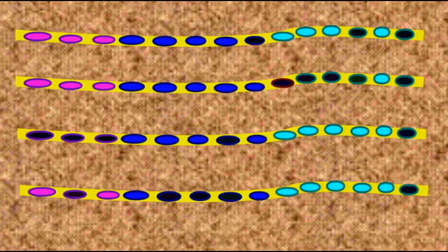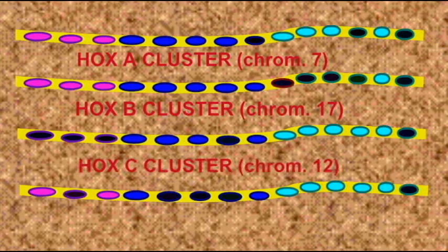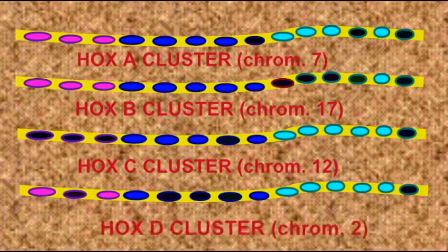But the four human hox clusters seem to have evolved from one single ancestral cluster in invertebrates through two rounds of genome duplication.